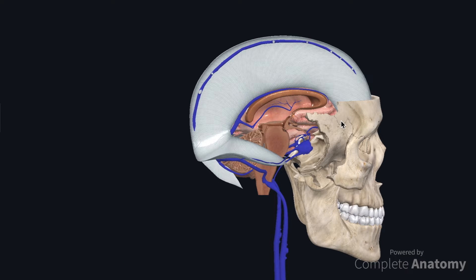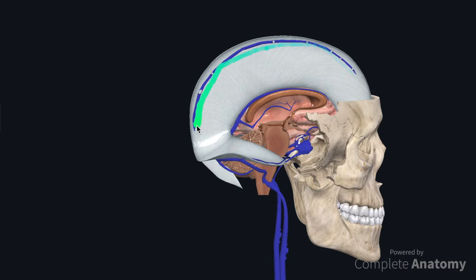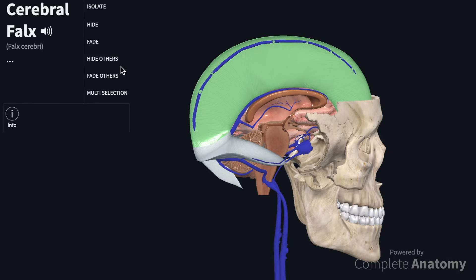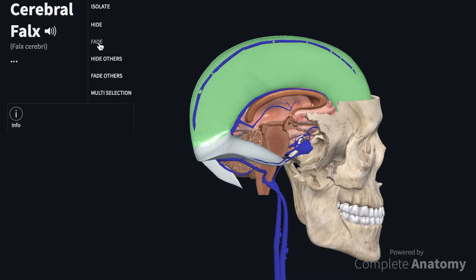The superior sagittal sinus runs within the upper border of the falx cerebri. It runs from the crista galli, located anteriorly although we can't see it on the model, all the way to the internal occipital protuberance which we can see here. Arachnoid granulations, which are where arachnoid projects through the meningeal layer of dura mater, are primarily found in the superior sagittal sinus, although some can be found in other sinuses as well.